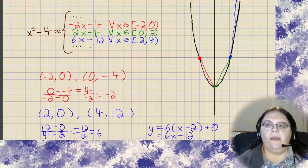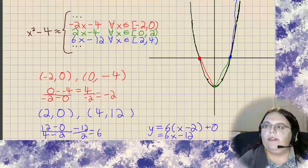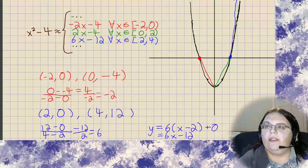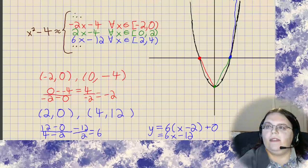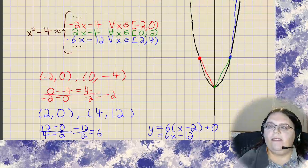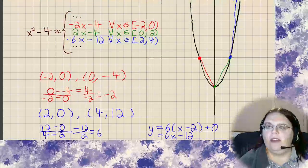And, again, we could continue this idea out as far as we want to in either direction, hence the ellipses at both ends of the three pieces of the function that I've done here.